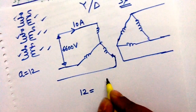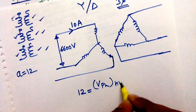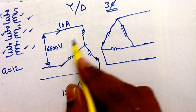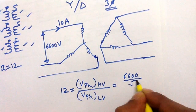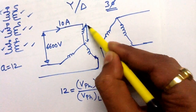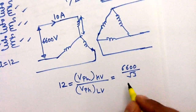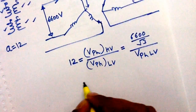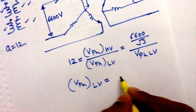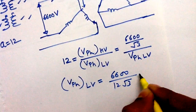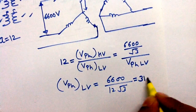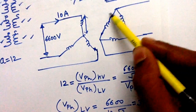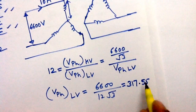The turns ratio equals the phase voltage of the HV side divided by the phase voltage of the LV side. The per-phase voltage of the HV side is 6600 divided by root 3, since the primary is star-connected. The per-phase voltage of the LV side will be 6600 divided by 12 root 3, which equals 317.55 volts.